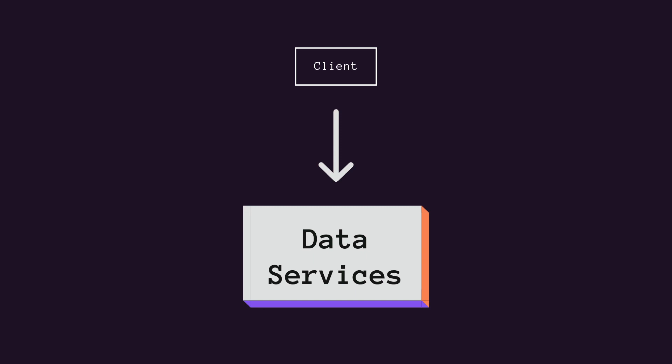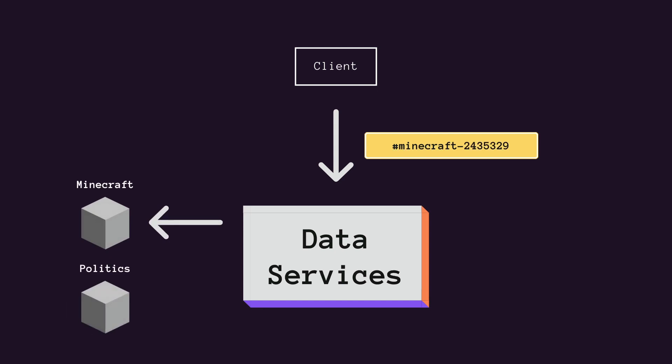The second part of the solution was consistent hash-based routing upstream of their data services to enable more effective coalescing. For each request to the data service, they provide a routing key — for messages, this is the channel ID — so all requests for the same channel go to the same instance of the service. This routing further helps reduce the load on the database. While these improvements helped a lot, they didn't solve all the problems, and they were still seeing hot partitions and increased latency.